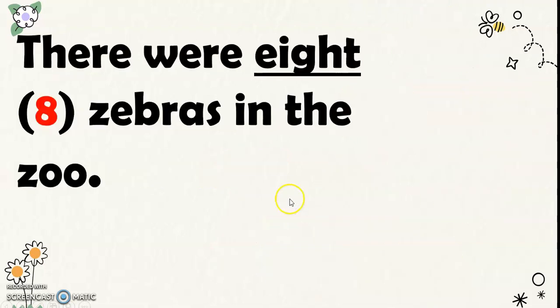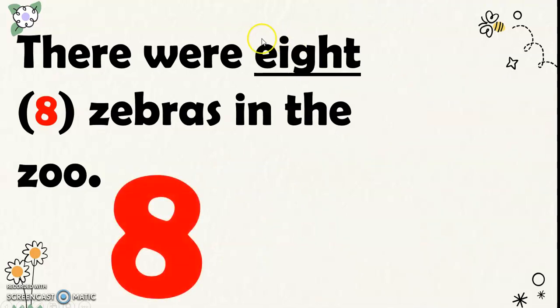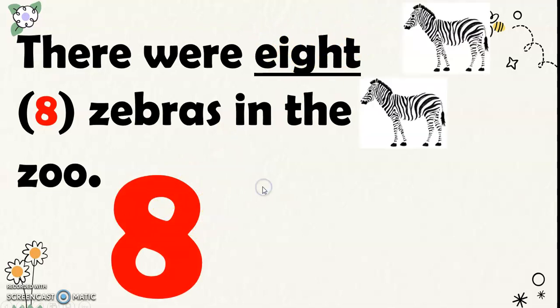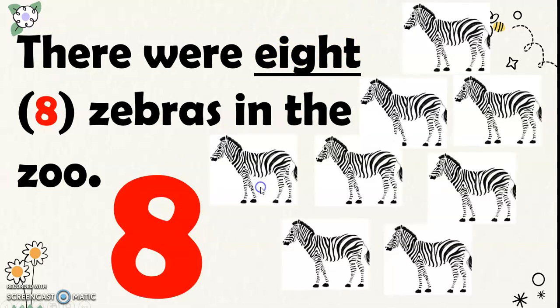Next, there were 8 zebras in the zoo. This is the number word for 8 and this is the number symbol for 8. So the 8 zebras in the zoo.